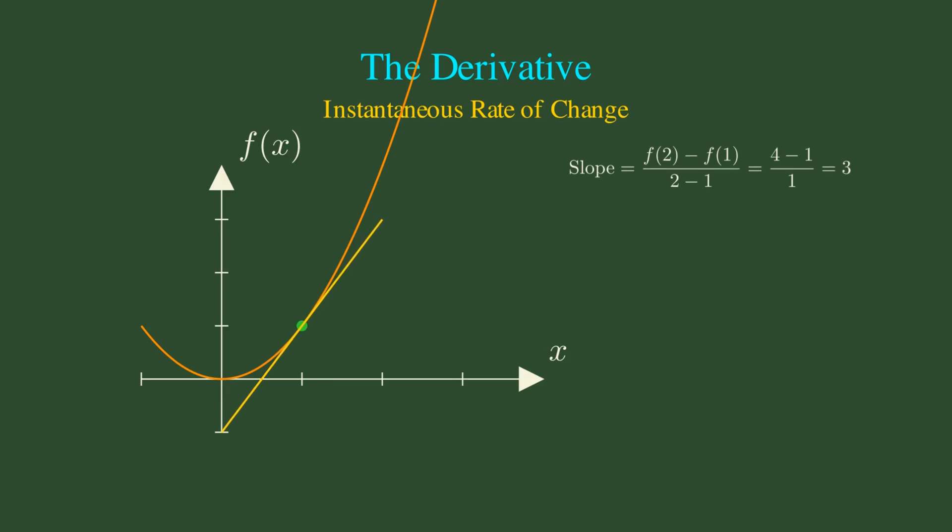For our example function f(x) = x², this yields f'(x) = 2x. The derivative tells us how fast something is changing at any given moment, whether it's velocity, growth rates, or the slope of any curve.